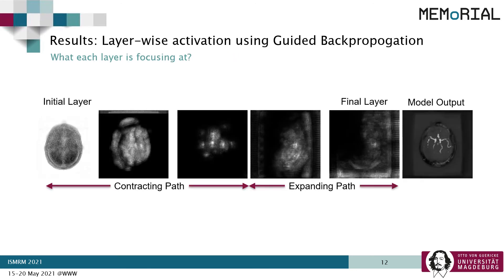Finally, let's have a look at the layer-wise attributions obtained using guided backpropagation. The first three results are from the contracting part of the U-Net and the next two are from the expanding path. The final image is the output of the model. All of these are maximum intensity projections of the results.